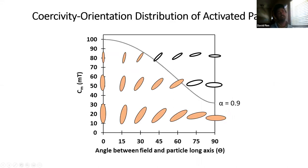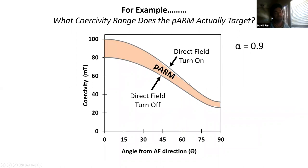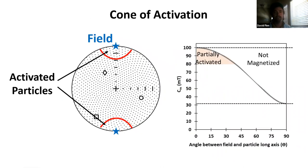I've re-plotted this curve and inserted little grains to highlight that this plot provides a useful means of viewing coercivity orientation distribution of a population of activated particles that could carry an ARM. For example, here I plot a partial ARM imparted as the AF decayed from 100 to 80 millitesla, and you can see that particles activated within this window have coercivities that extend far below 80 millitesla. This is obviously important for inclination correction. I want to introduce the cone of activation.